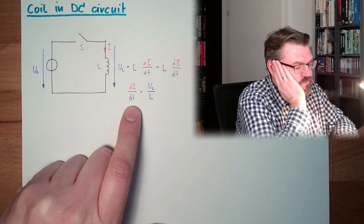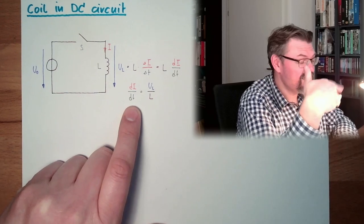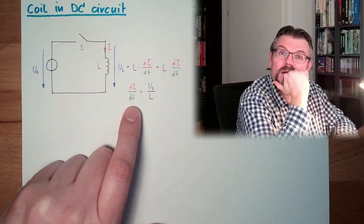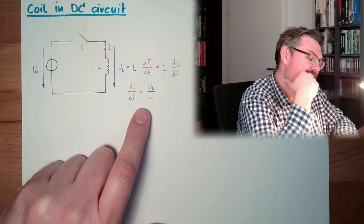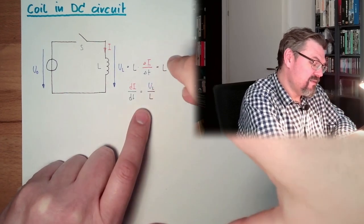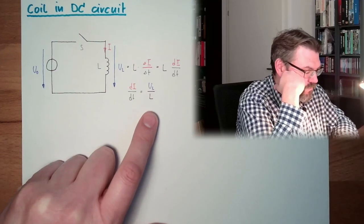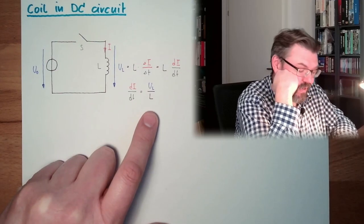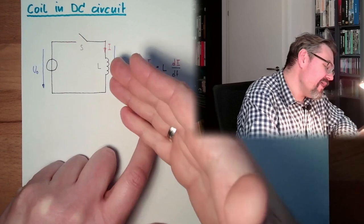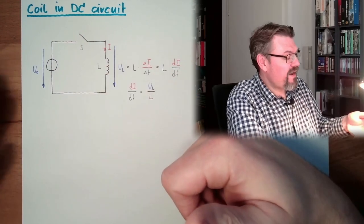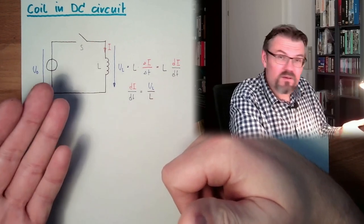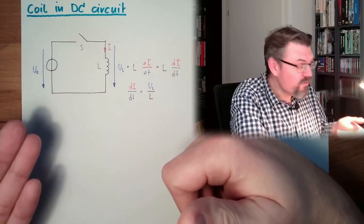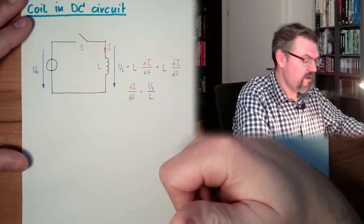How can this be, huh? I think everybody knows that this is not happening. The current is growing, growing, growing, growing, growing. But is the math wrong? No. It's not the math. It's the elements. We are talking about an ideal voltage source and an ideal coil. This is not happening in real life. We don't have ideal elements, right?